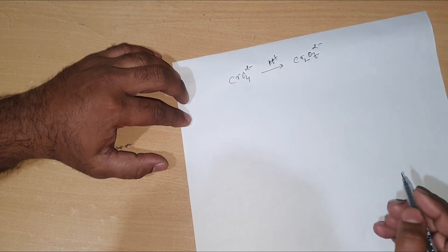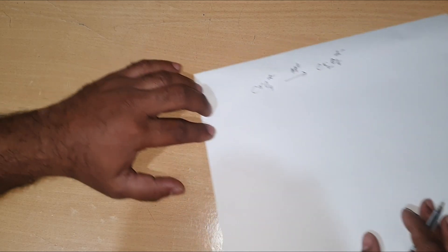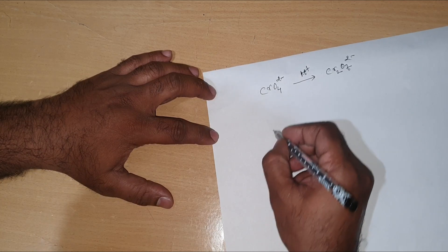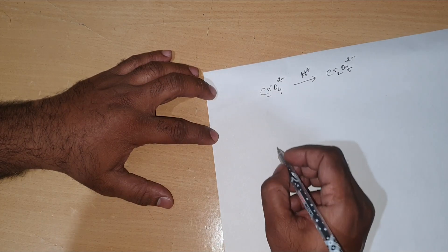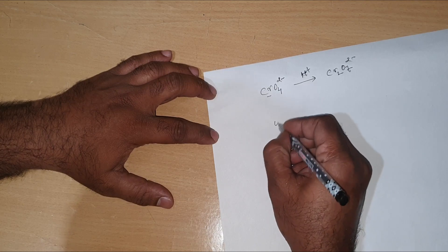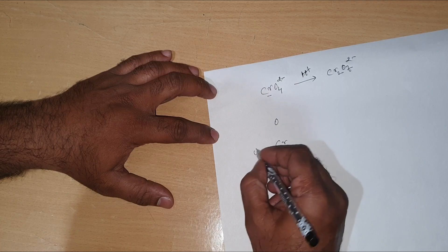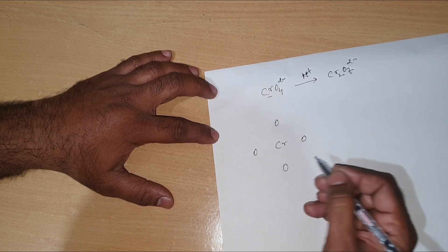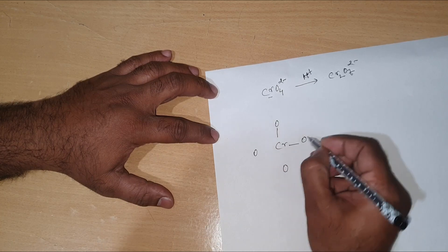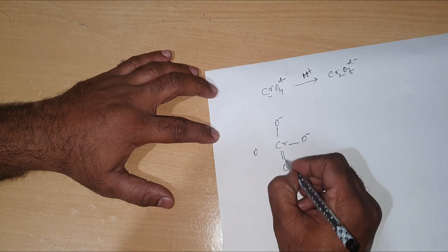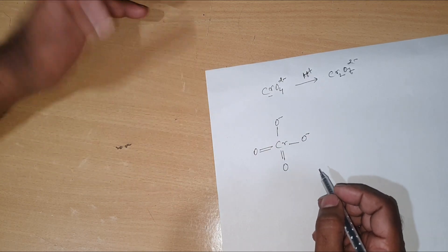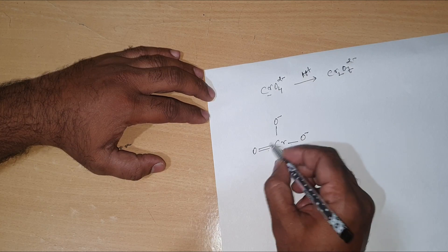Now let me write the structure of chromate. This chromate ion has a chromium atom at the center, surrounded by four oxygen atoms. Among the four oxygen atoms, two oxygen atoms with a single bond are carrying the negative charge, and the other two oxygen atoms have a double bond, giving chromium an oxidation state of +6.